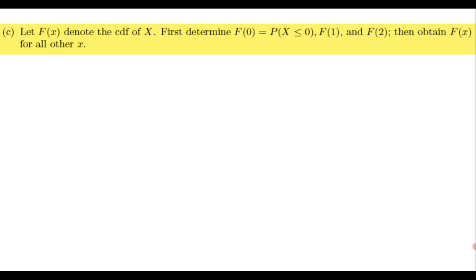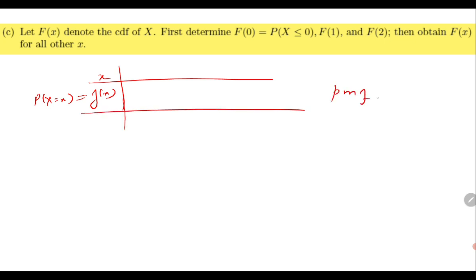Now we need to compute the cumulative distribution function (CDF). The idea is simple: we have small f(x), which is P(X = x), the probability mass function. X can take only three values: 0, 1, and 2. The PMF values we computed are f(0) = 0.3, f(1) = 0.6, and f(2) = 0.1.